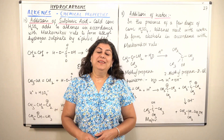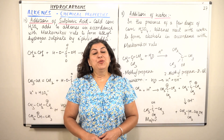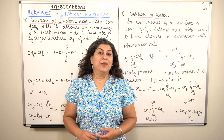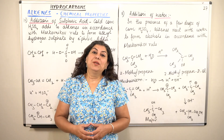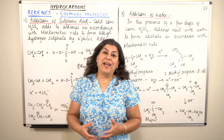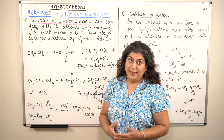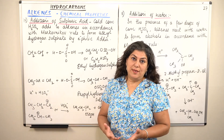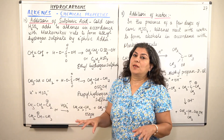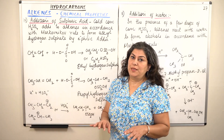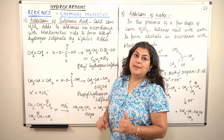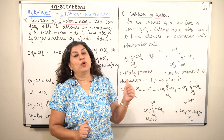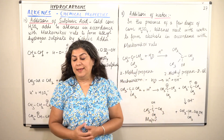Hello, I'm Seema and welcome to part 27 of the chapter Hydrocarbons. We were doing the properties of alkenes — the chemical properties of alkenes. Moving ahead with our discussion, in this video we are going to discuss two more properties: the addition of sulfuric acid and the addition of water to alkenes.